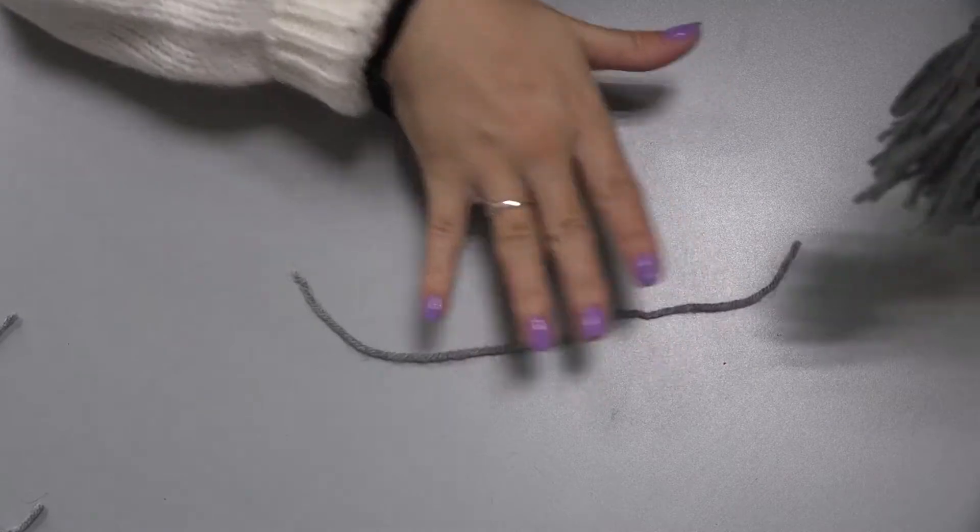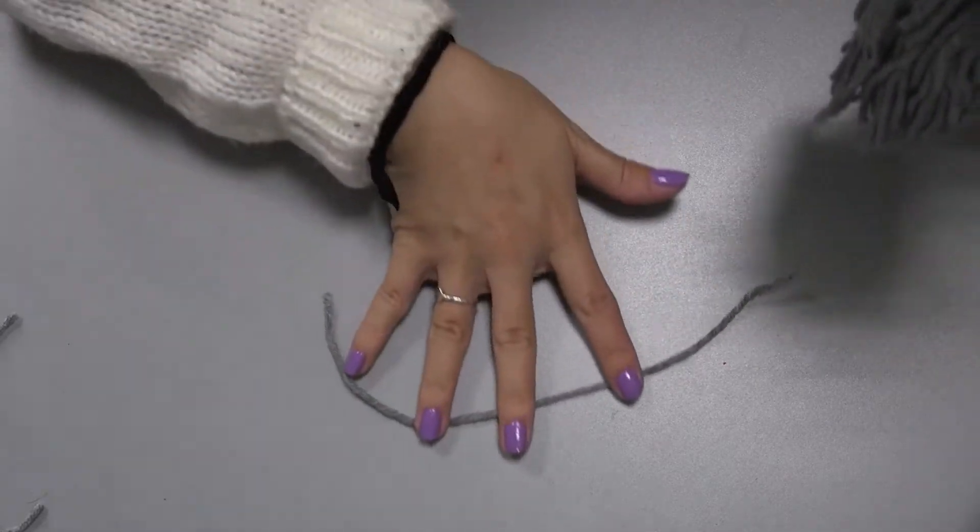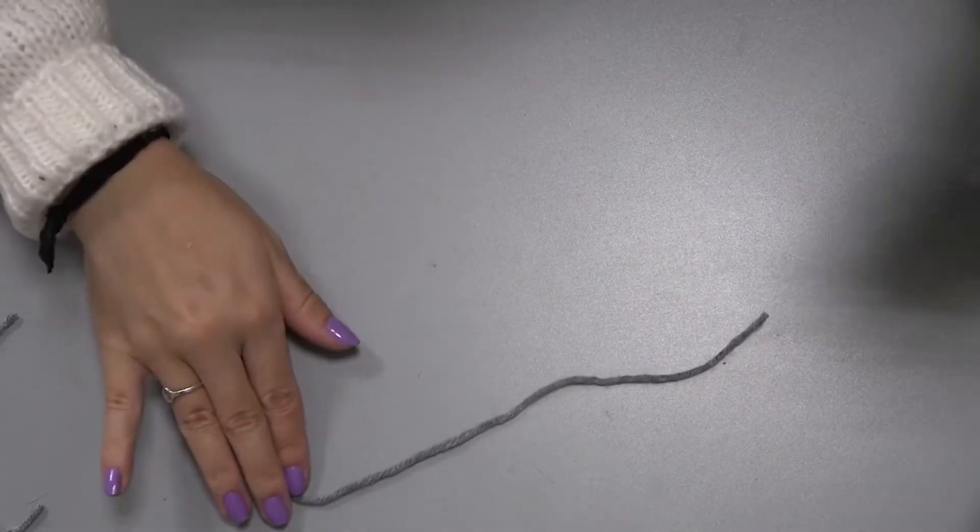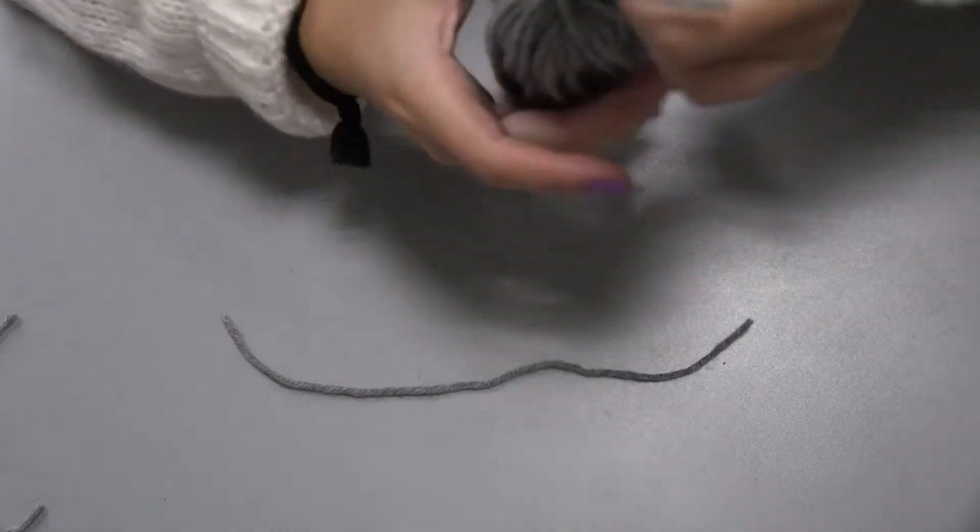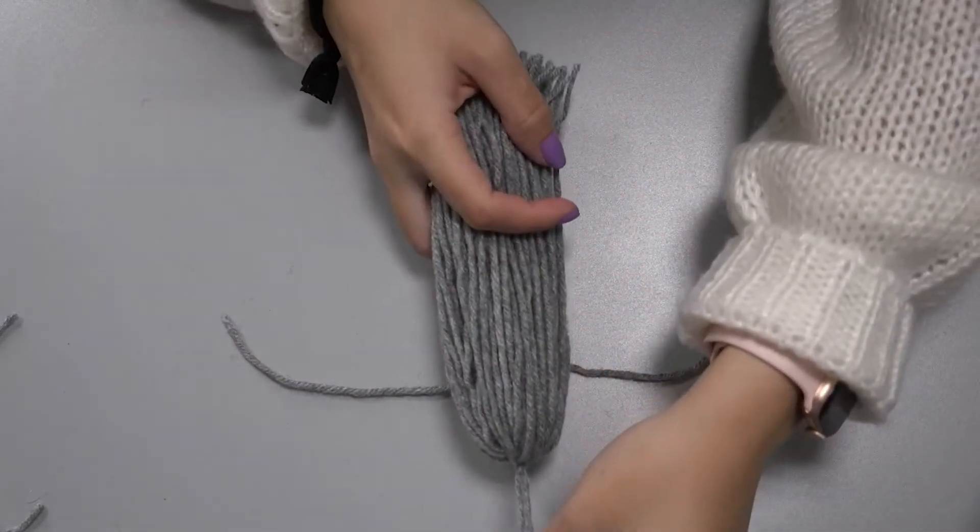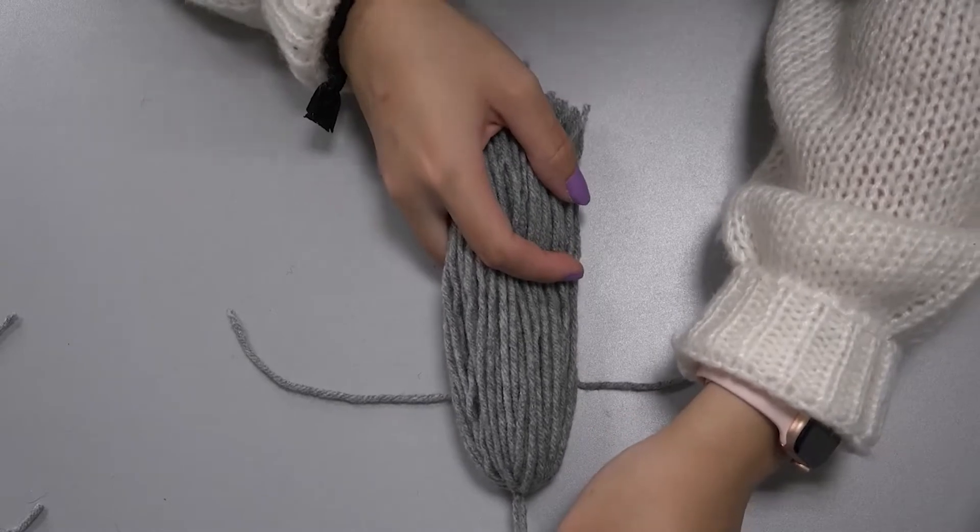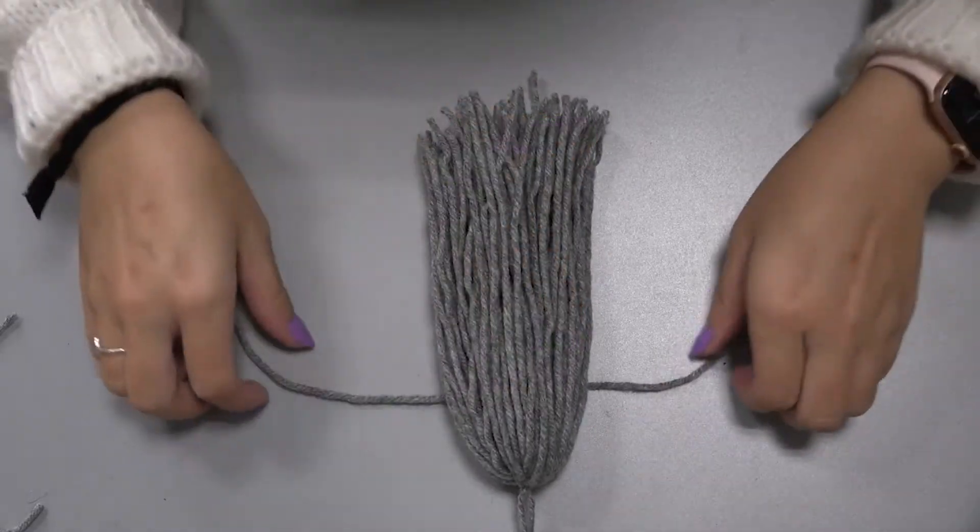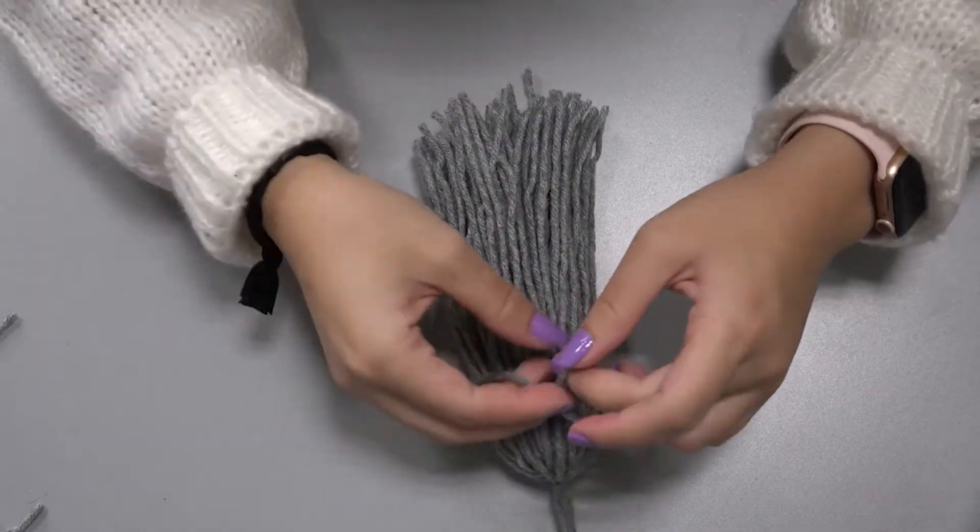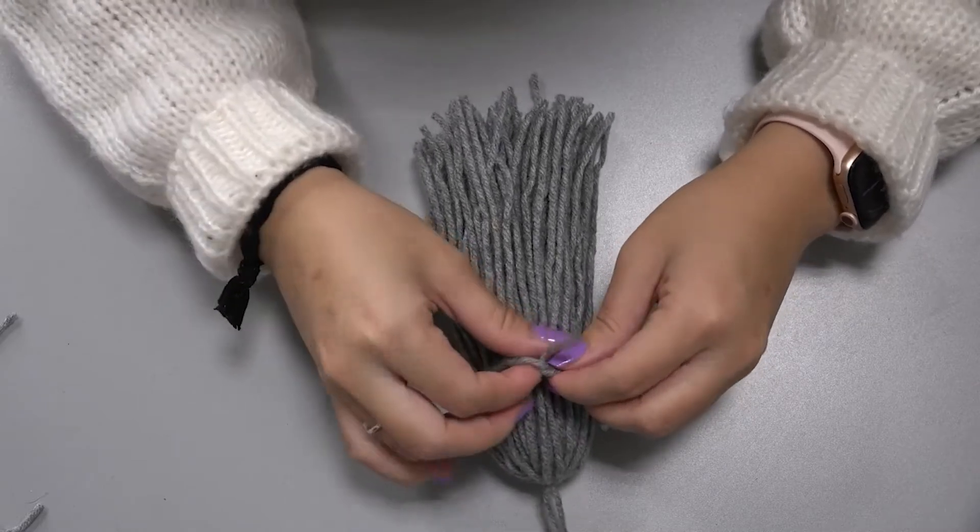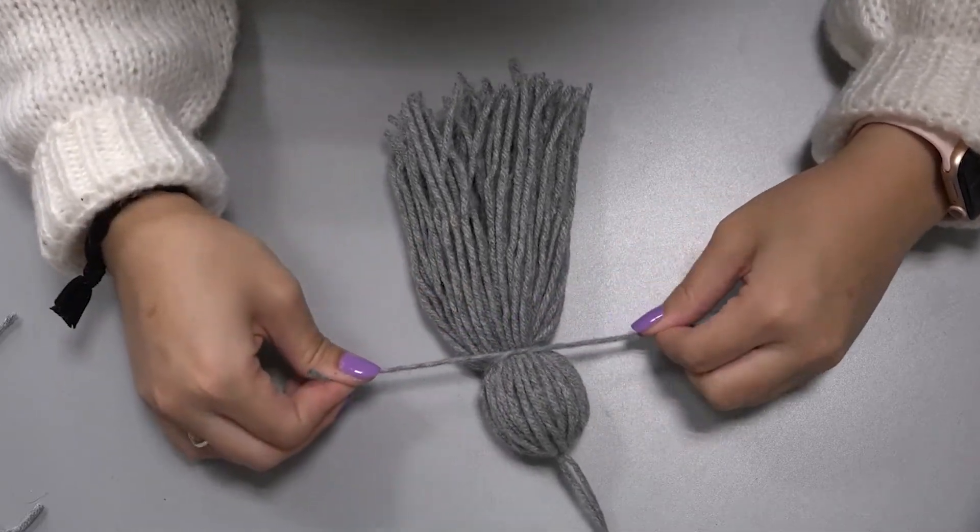Then you're going to want to place your second cut yarn on the table. And then you're going to kind of place it where you want the head to end off. So I want it to end off there. And then again, you're just going to tie it like normal.